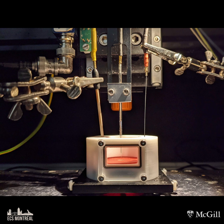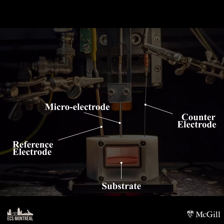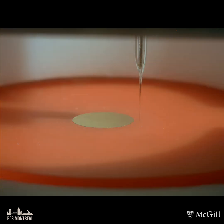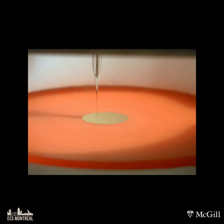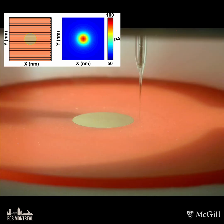The SECM setup includes four elements: a microelectrode as a probe, a substrate of interest, a reference electrode, and a counter electrode. SECM measurements are based on the reaction that occurs at the tip of the microelectrode, which is immersed in an electrolyte containing a redox mediator. The microelectrode is positioned and scanned very close to the substrate surface in order to characterize both its topography and reactivity.